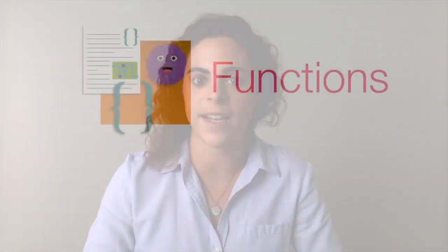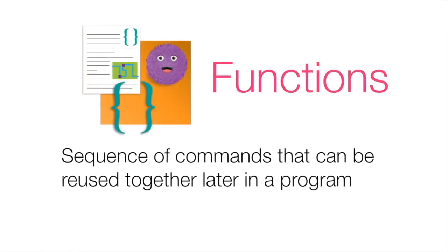In programming, we often use the same code more than once. We can repeat actions or we can add onto pieces of code to complete more complex tasks. Functions allow us to teach the computer how to do something one time and easily reuse the code to do it again later. A function is a sequence of commands that can be reused together later in a program. Functions name a sequence of commands and dictate what code is executed, allowing for separation of code and making it easy for us to reuse it again later.